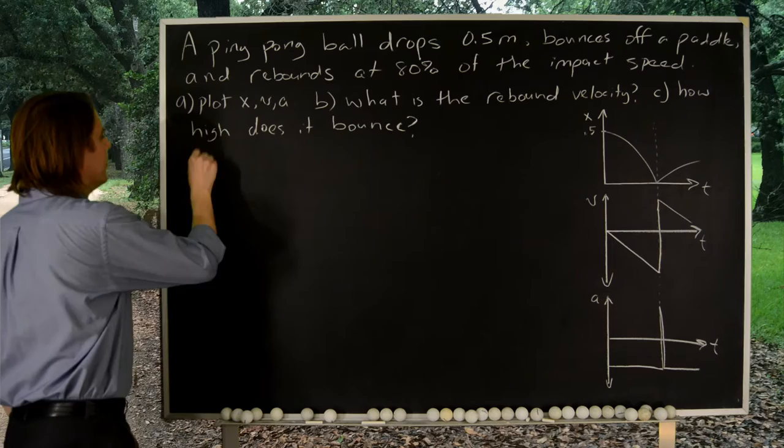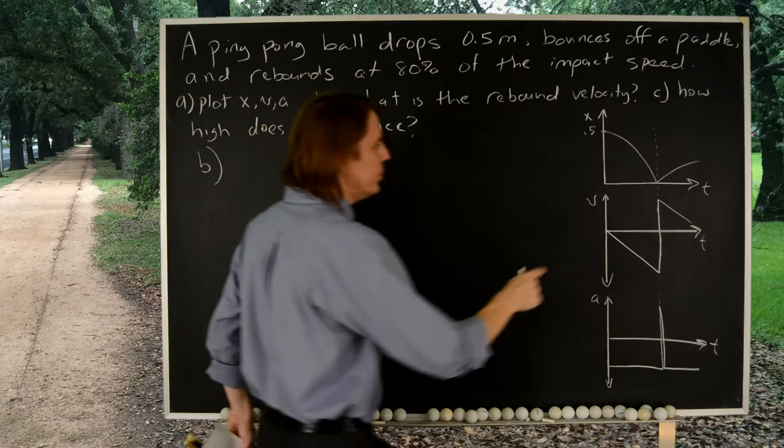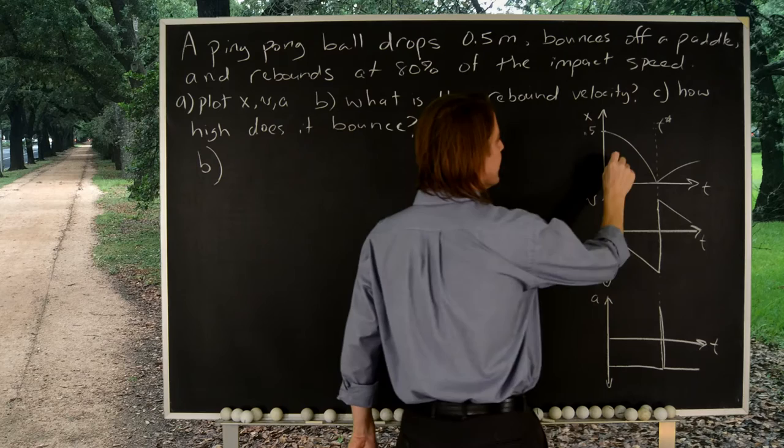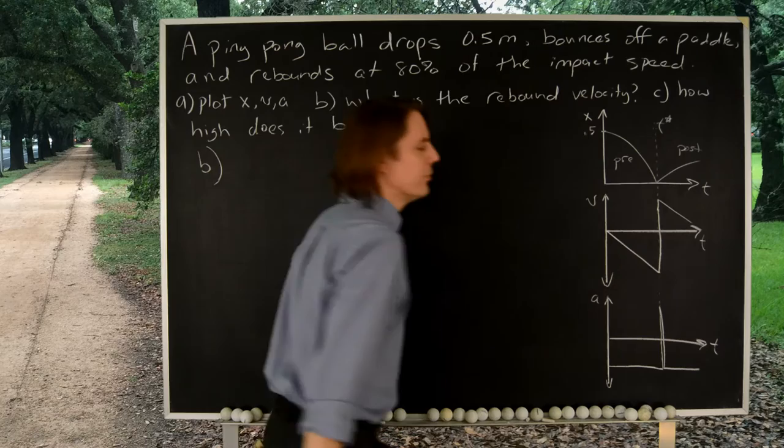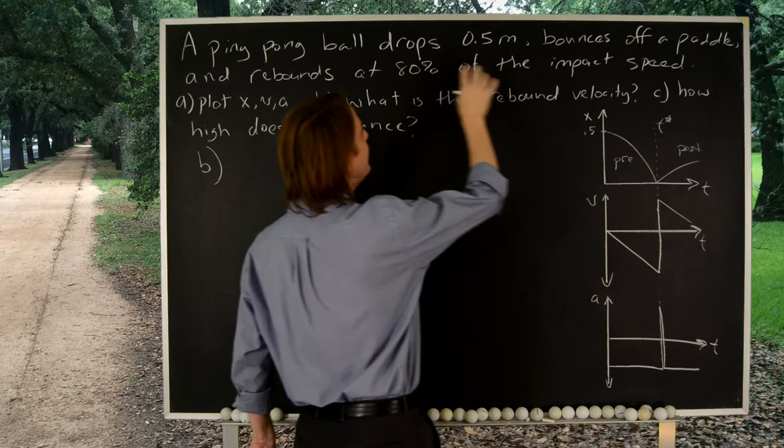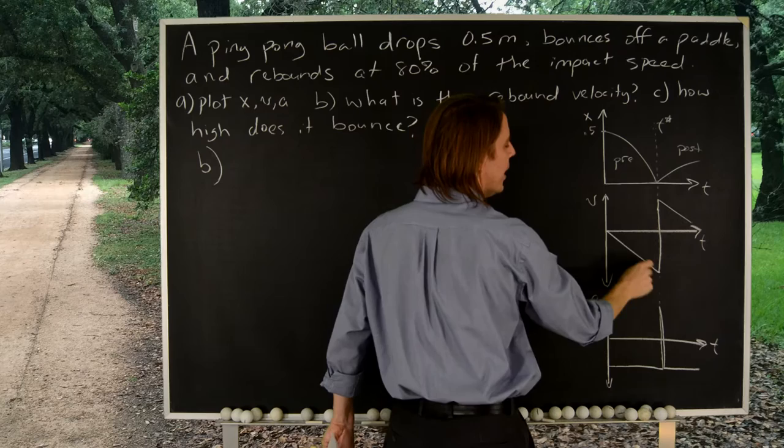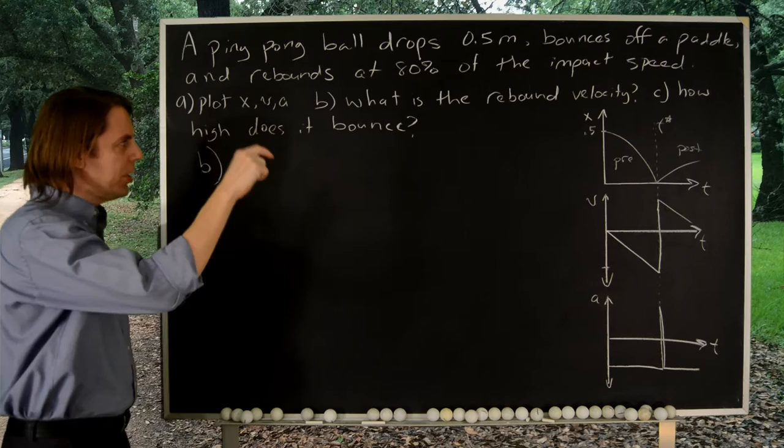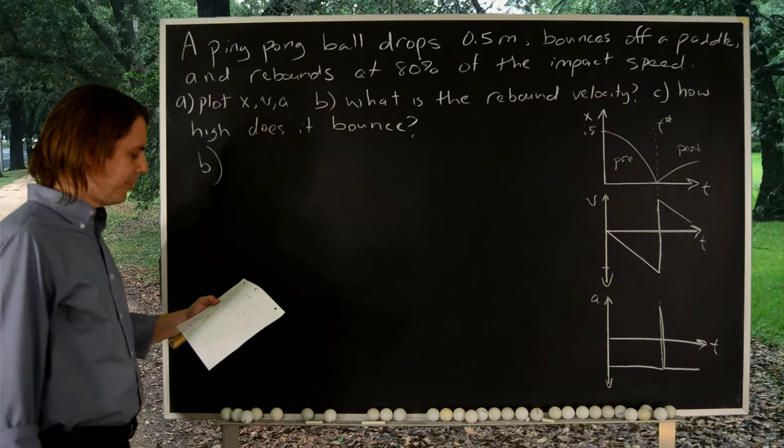Okay, B, what is the rebound velocity? Let's see, the rebound velocity. So let's start labeling some things here. Let's call this special time T star. And let's call this kind of the pre-bounce region. Let's call this the post-bounce region. So we want to know the velocity after the bounce. We know the speed is 80% before the bounce. So really, we need the speed right there. We need to know how far down does it get. That's the first thing we need to calculate. So we dropped something from rest. It dropped 0.5 meters. And we need to know how fast is it going when it gets down by 0.5 meters.